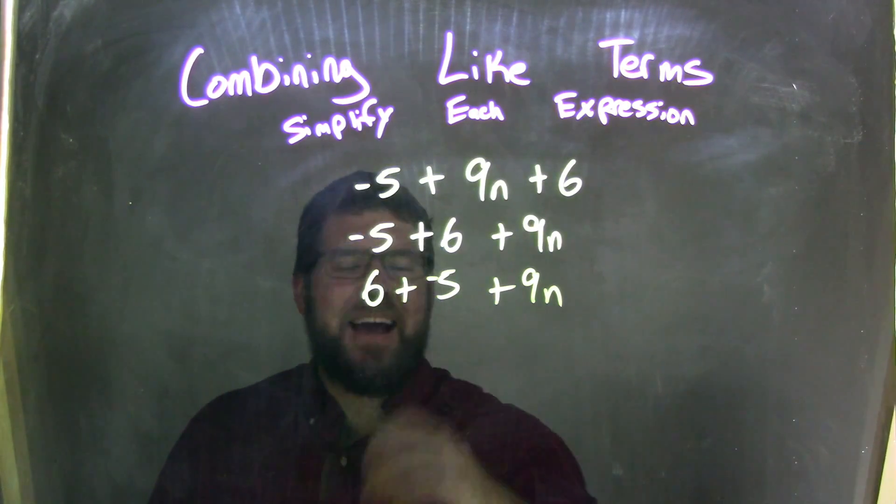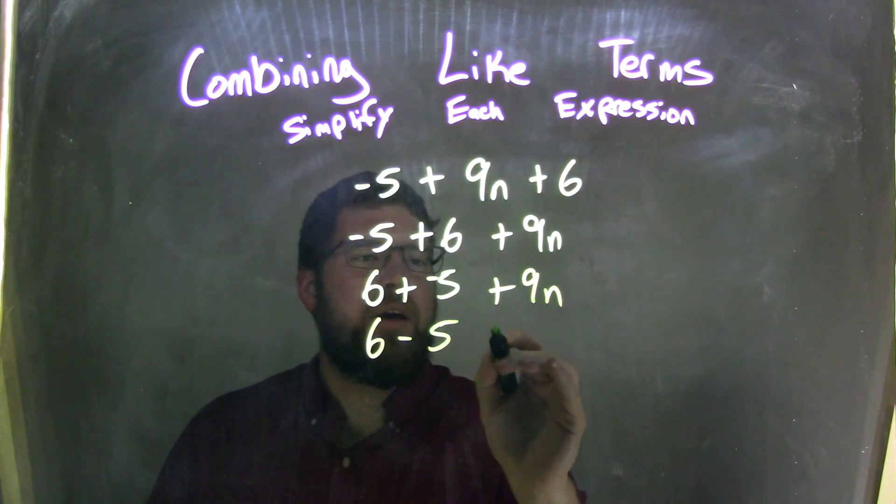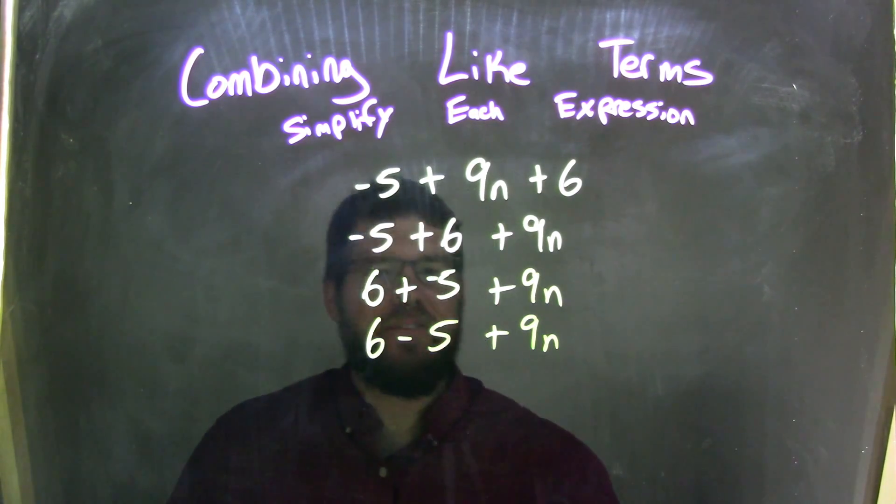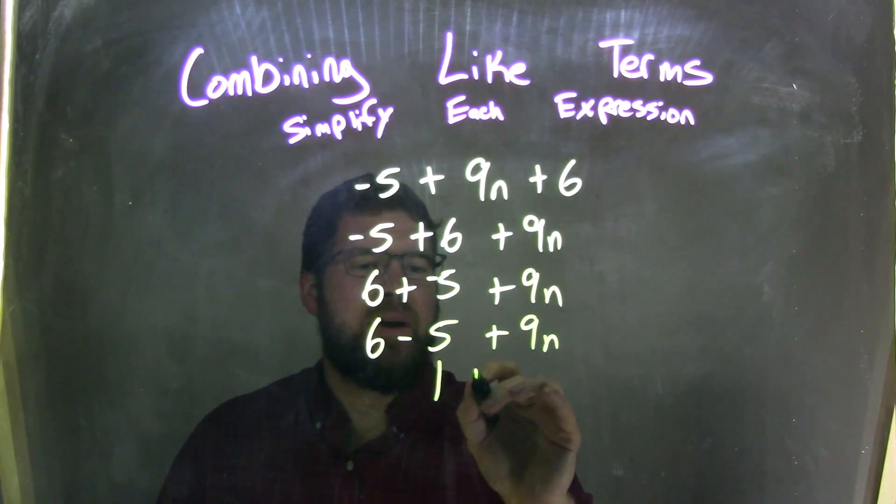We know that adding a negative is the same thing as subtraction, so 6 minus 5 plus 9n, bring down that 9n there. And now it's easier to see, right, 6 minus 5 is just 1, bring down the 9n.